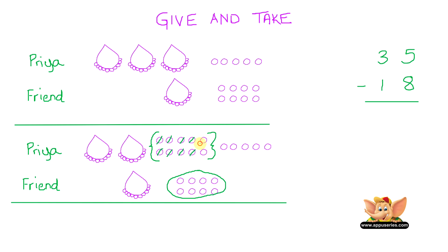So that's 1, 2, 3, 4, 5, 6, 7. Priya is left with 7 loose pearls.